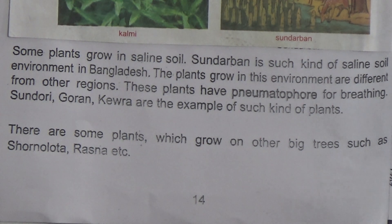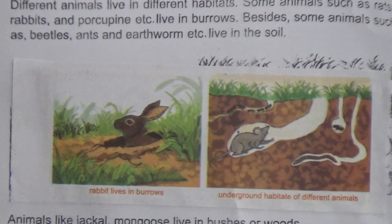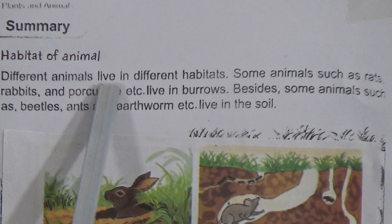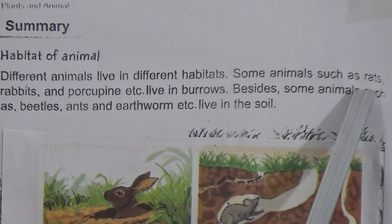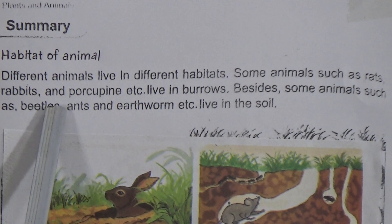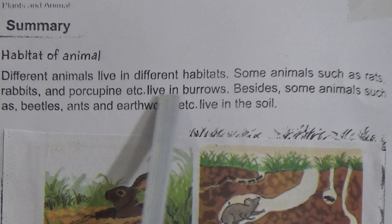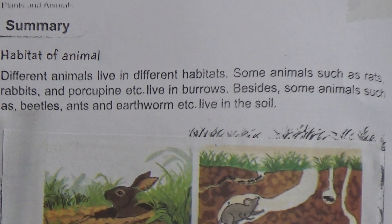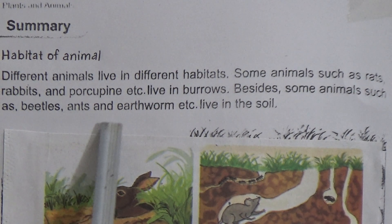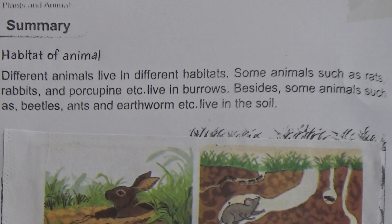Page number 16: Habitat of Animals. Different animals live in different habitats. Some animals such as rats, rabbits, and porcupines live in burrows. Some animals such as beetles, ants, and earthworms live in the soil. You can see here is a rabbit — it lives in burrows.